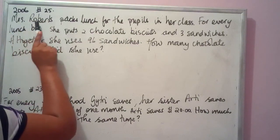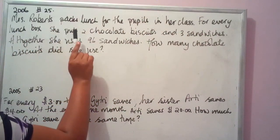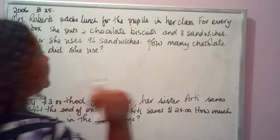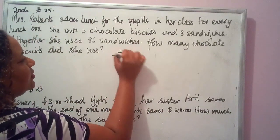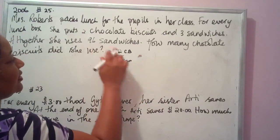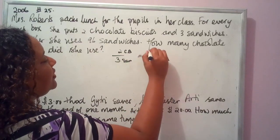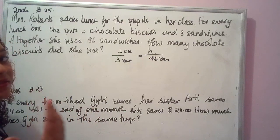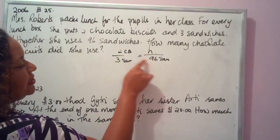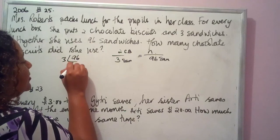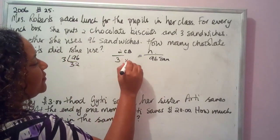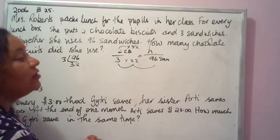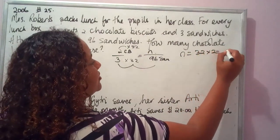For 2006, number 25: Mrs. Roberts packs lunch for the pupils in her class. For every lunchbox, she puts 2 chocolate biscuits and 3 sandwiches. Altogether, she uses 96 sandwiches. How many chocolate biscuits did she use? Step 1: create the equation — 2 chocolate biscuits over 3 sandwiches equals N over 96. Using equivalent fractions: 96 divided by 3 equals 32, so N equals 32 times 2 equals 64.